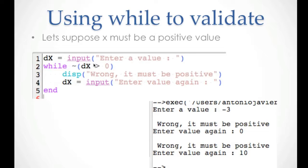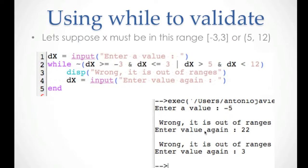Here is another way to write the same validation: while NOT (X is bigger than zero). The condition we want is X bigger than zero, but since we are not there yet, it's a wrong area — we display the error and get the value again. It's another way to reach the same solution. When X must be in different ranges, like from negative three to three or from five to twelve (not including five or twelve), it's better to use NOT to negate the whole true condition and then get the value again.